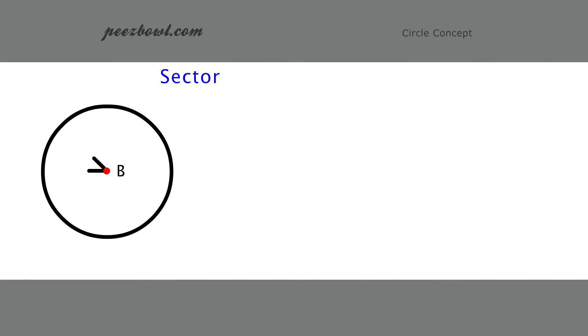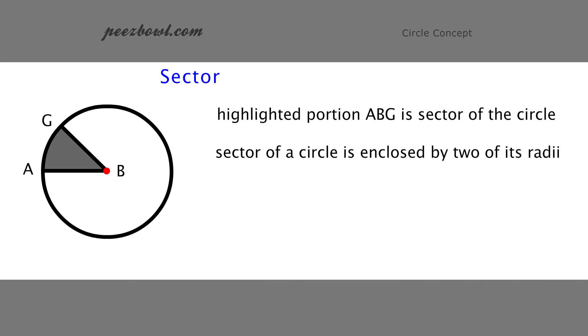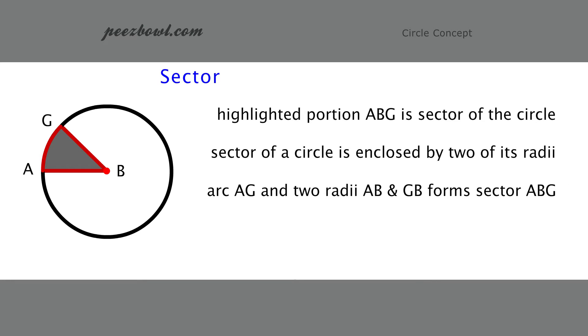Let us color some part of the circle. Look at the highlighted portion ABG. This portion is called sector of a circle. Sector of a circle is enclosed by two of its radii. In this example, the curved portion of arc AG enclosed by two of the circle radii AB and GB forms a sector ABG. Remember how pizza is cut in different sectors.